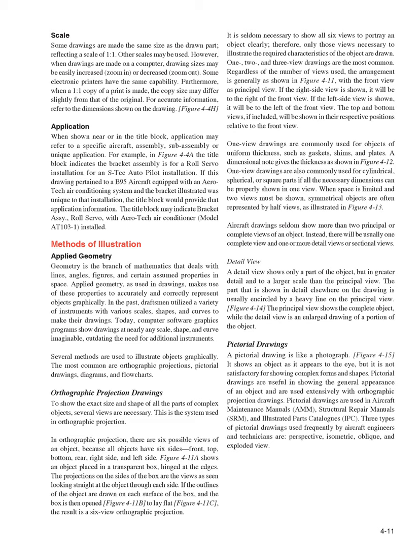Regardless of the number of views used, the arrangement generally has the front view as the principal view. The right side view, if shown, will be to the right of the front view; the left side view to the left. Top and bottom views are shown in their respective positions relative to the front view. One-view drawings are commonly used for objects of uniform thickness such as gaskets, shims, and plates, as well as for cylindrical, spherical, or square parts where all necessary dimensions fit in one view. Aircraft drawings seldom show more than two principal views — there will usually be one complete view and one or more detail or sectional views.